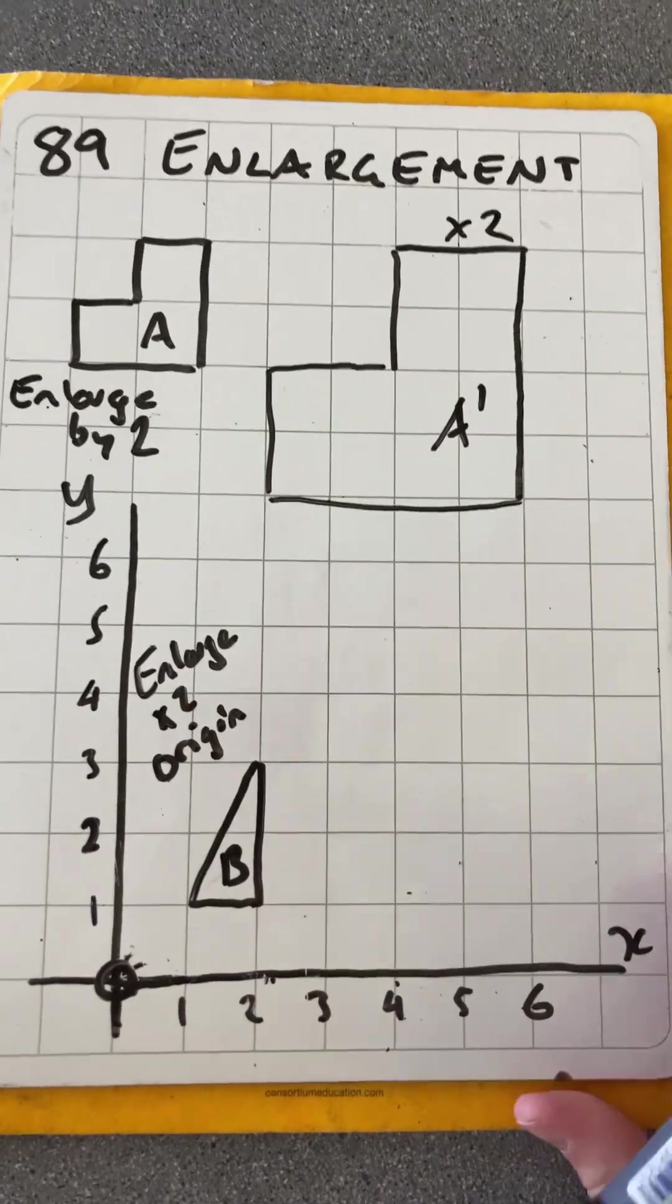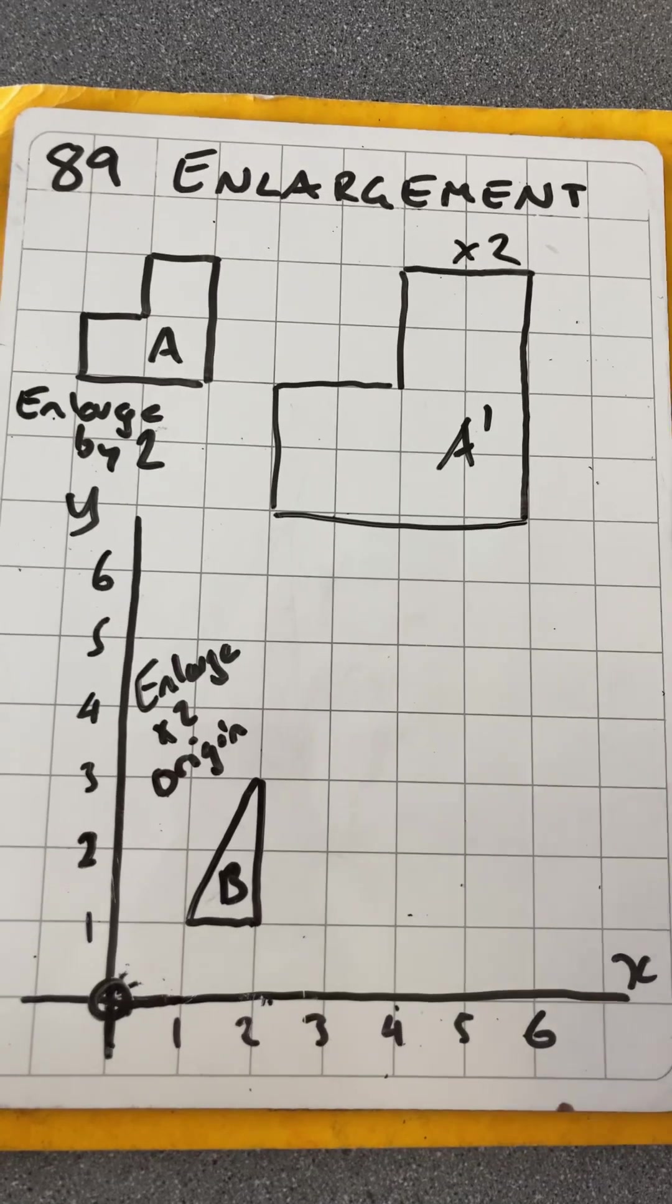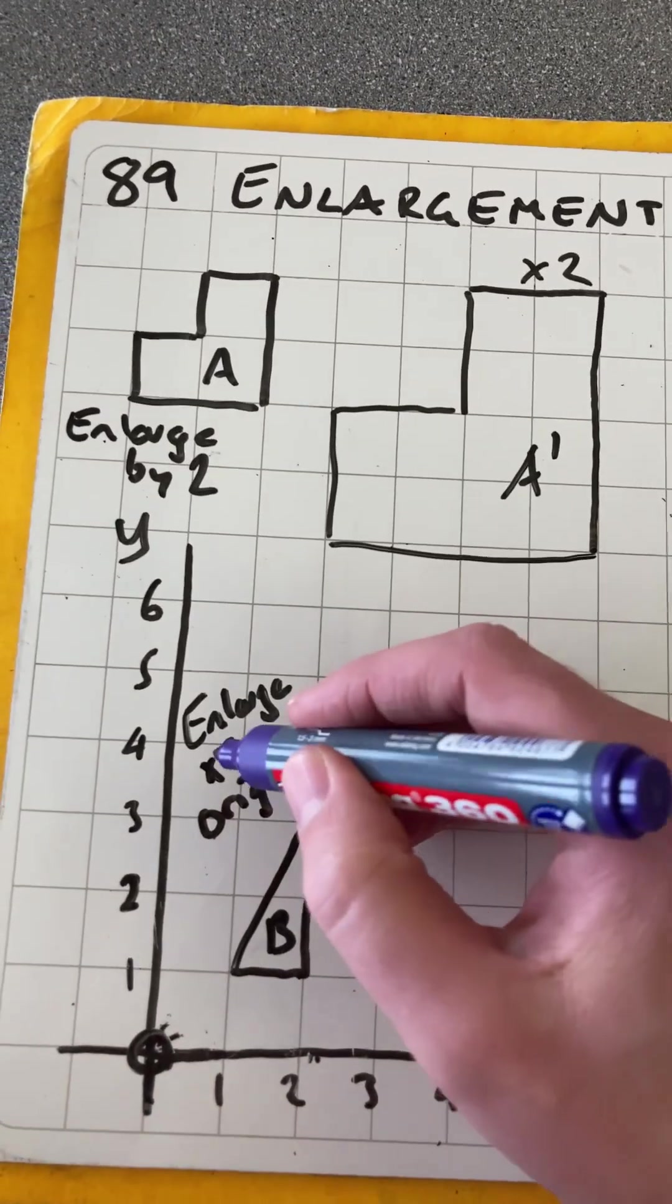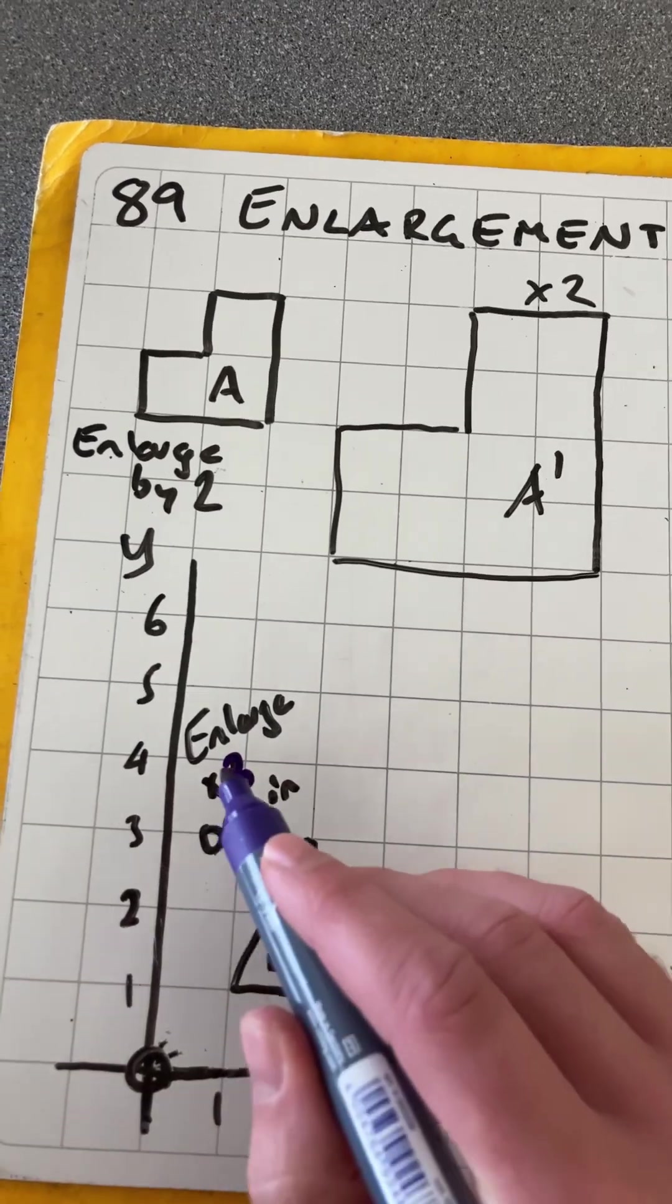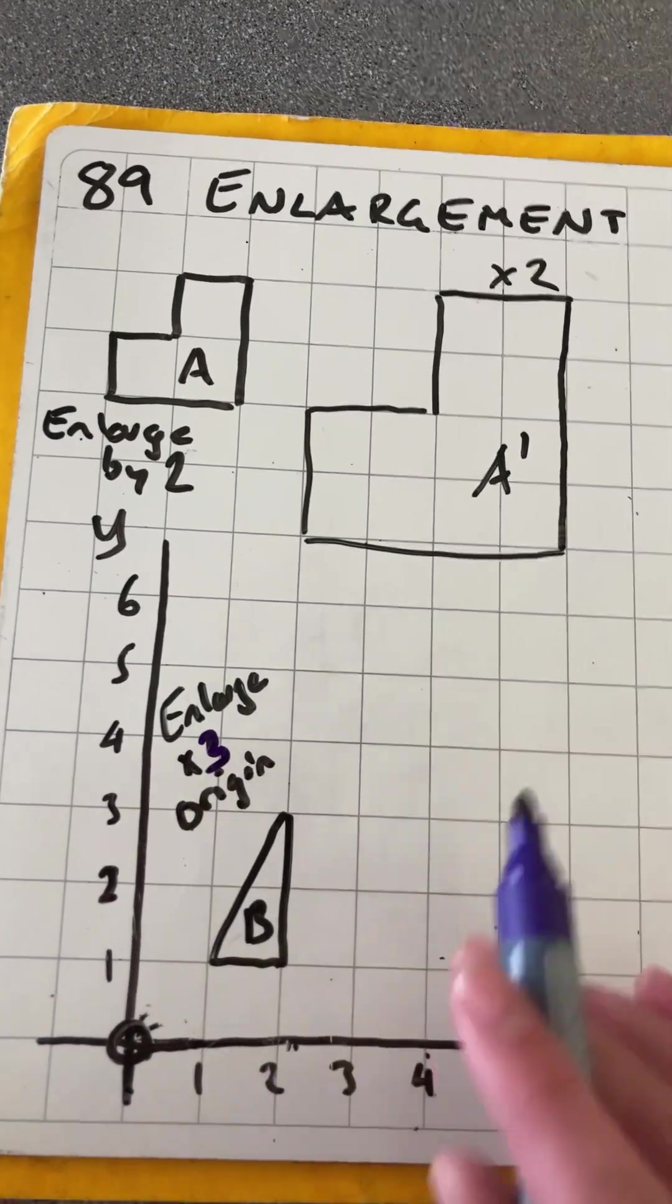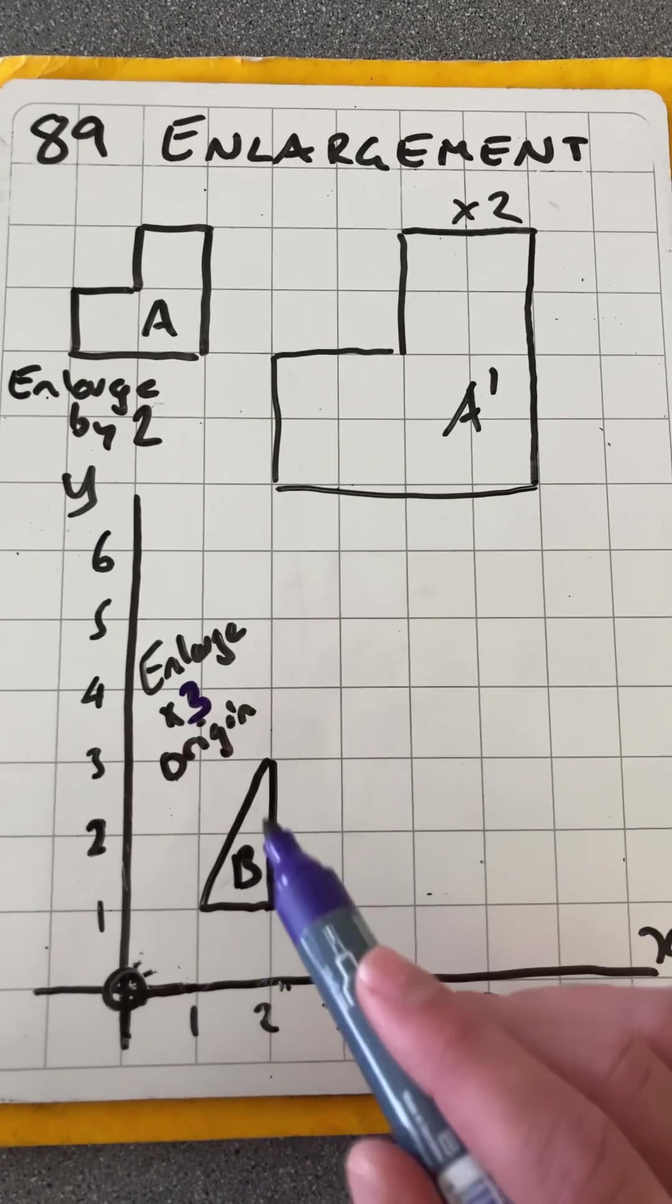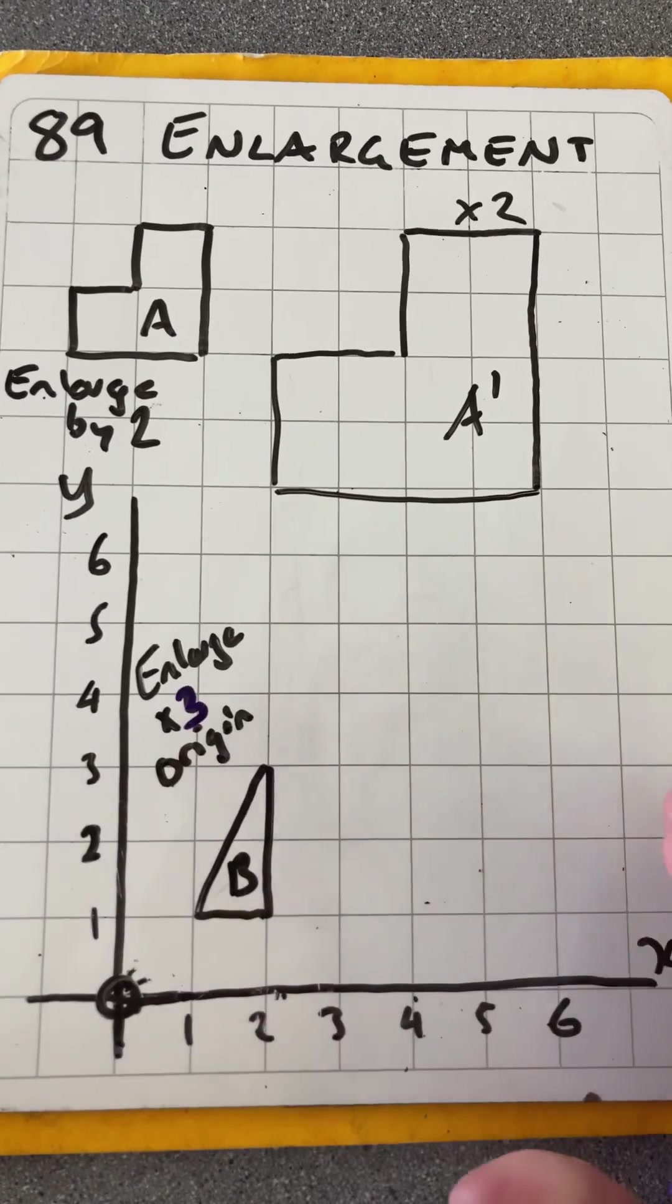If I now put this on a coordinate grid, or x and y axes, I'm going to enlarge this shape by a scale factor of 3 from the origin. Here I could place the image anywhere, but now I've got to place it in a certain position from the origin.